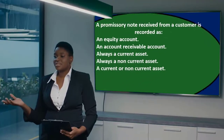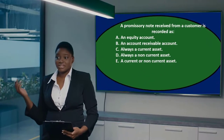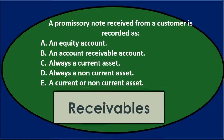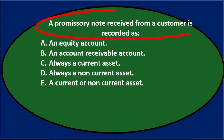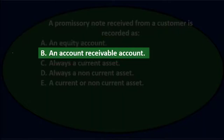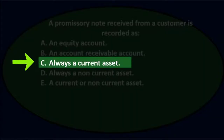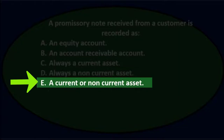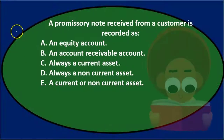In this presentation we will take a look at multiple choice questions related to receivables. First question: a promissory note received from a customer is recorded as A) an equity account, B) an accounts receivable account, C) always a current asset, D) always a non-current asset, or E) a current or non-current asset.